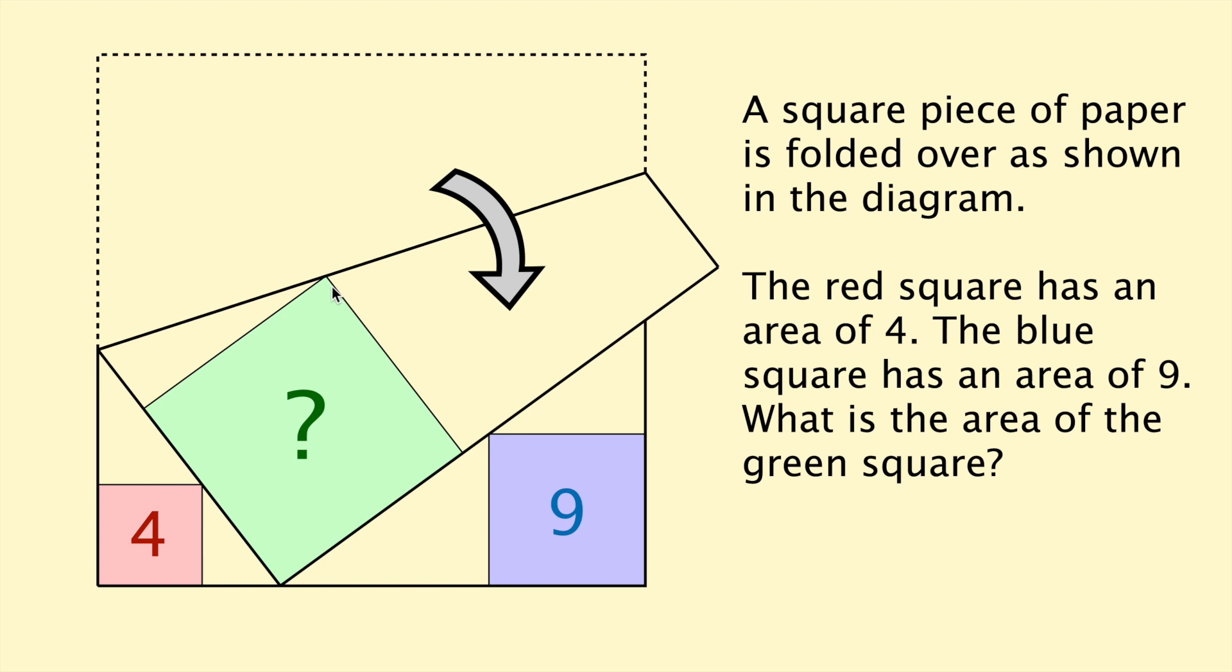Hey problem solvers, here's another problem for you to have a go at. This one says a square piece of paper is folded over as shown in the diagram. The red square has an area of 4, the blue square has an area of 9. What is the area of the green square?